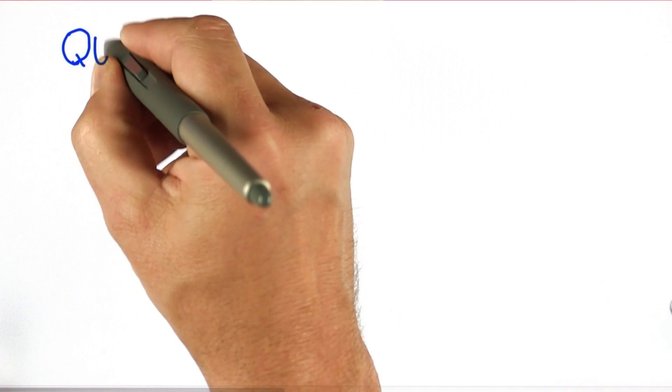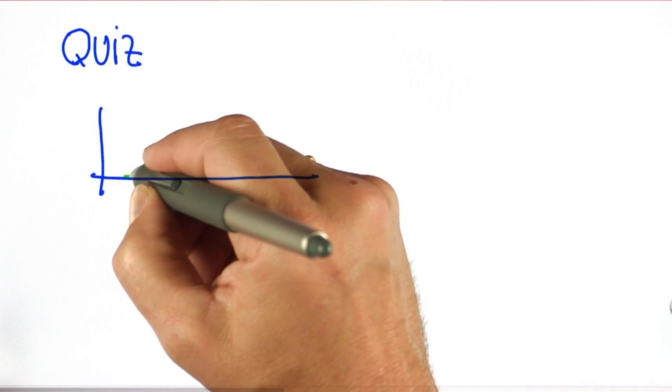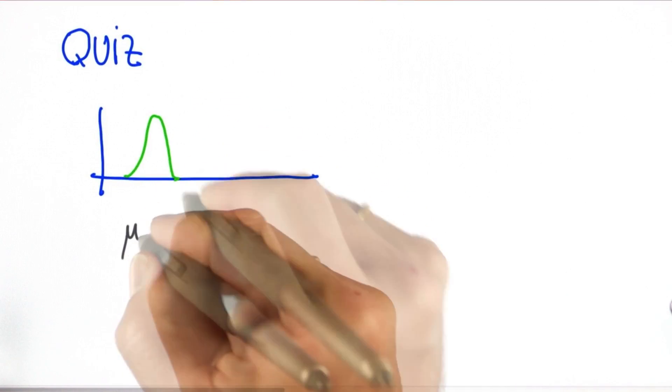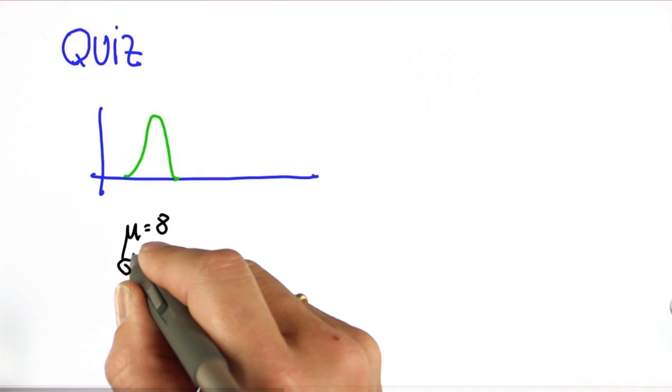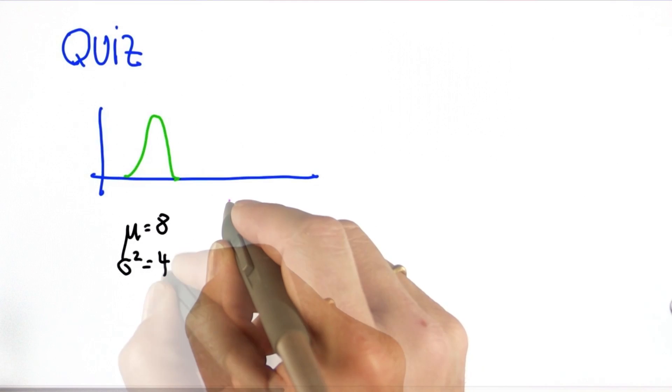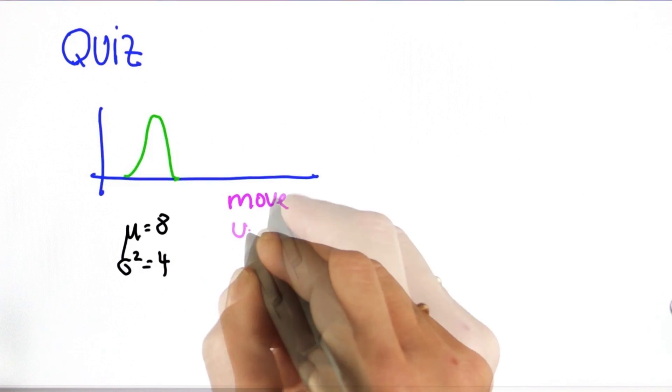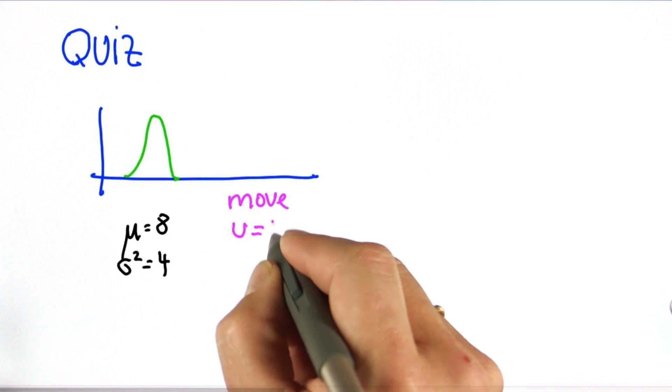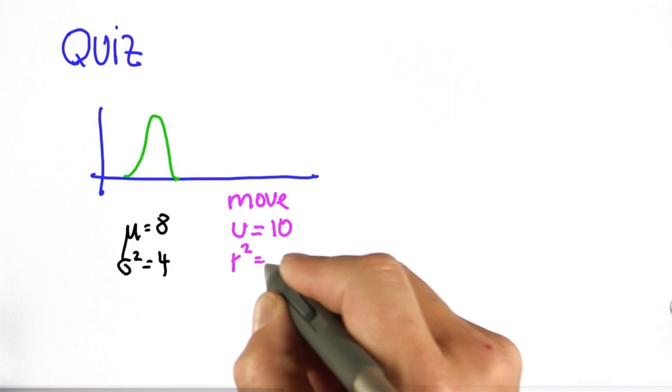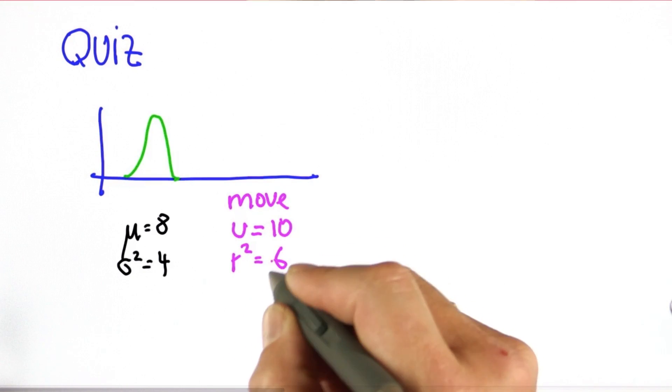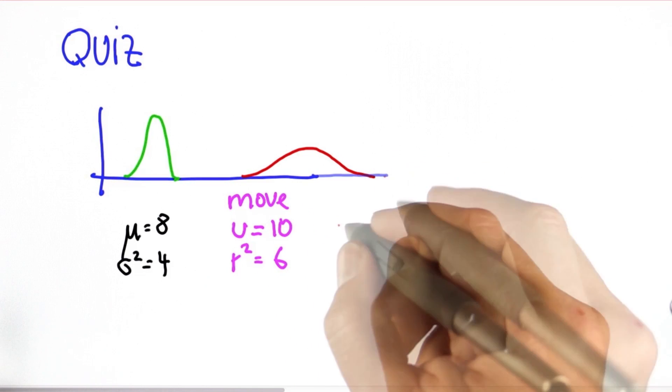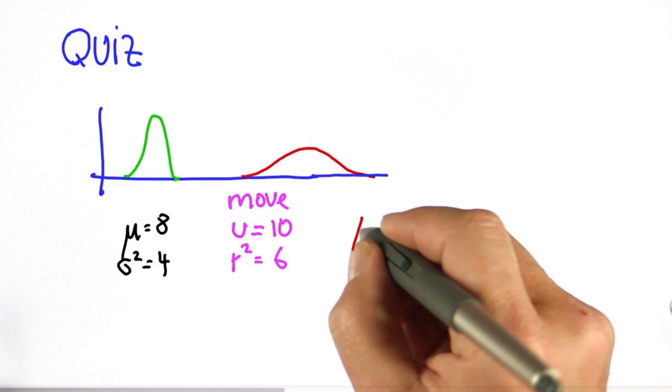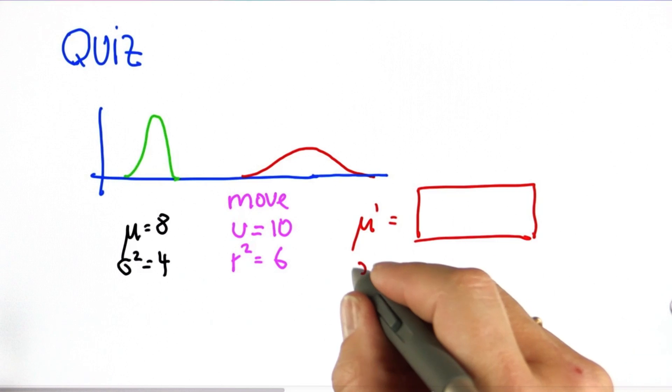Since this was so simple, let me quiz you. We have a Gaussian before the prediction step, for which mu equals 8 and sigma squared equals 4. We then move to the right a total of 10 with a motion uncertainty of 6. Now describe to me the predicted Gaussian and give me the new mu and the new sigma squared.